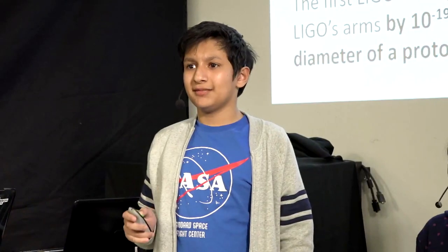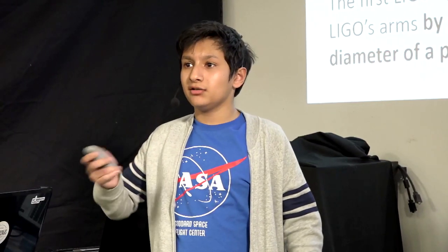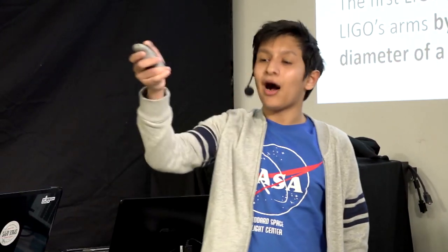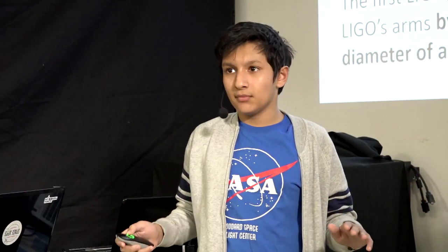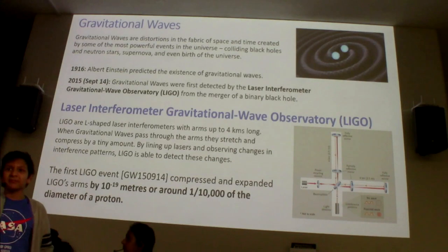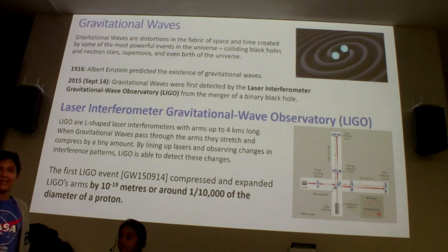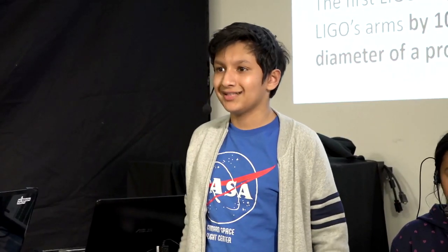One of the key concepts of how LIGO works is light. If you have a laser and bounce it across a room, no matter how many times you do it, the time it takes to go there and come back remains the same. So to measure how much the arms are shrinking or expanding, we bounce lasers through these arms. The two lasers reflect off mirrors, meet together, and cancel each other out. When there are no gravitational waves, we detect no light because the lasers are canceling out.